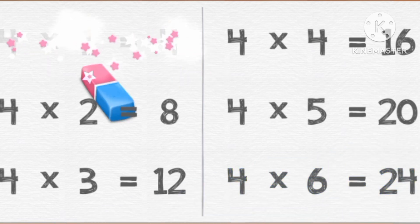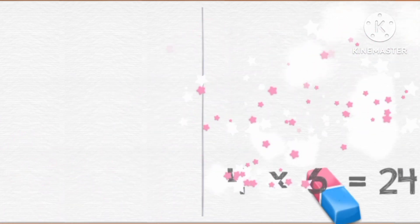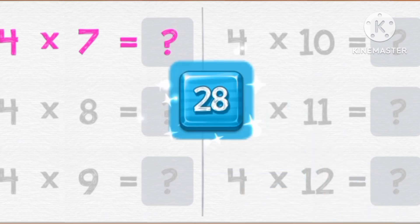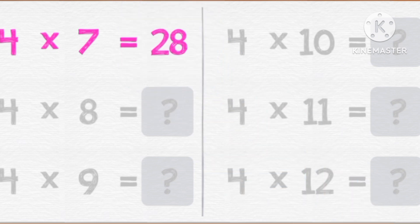Four times seven, twenty-eight. Four times eight, thirty-two.